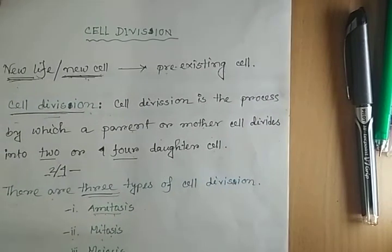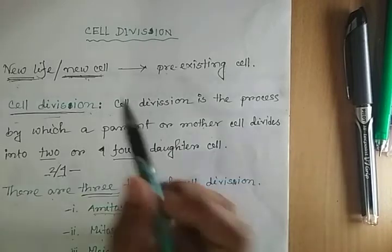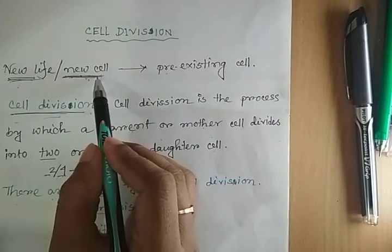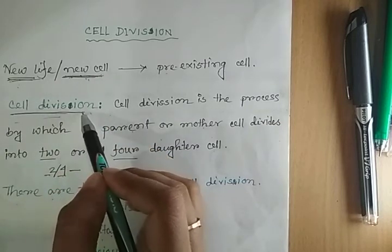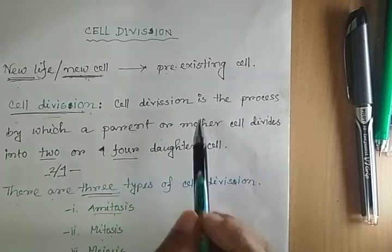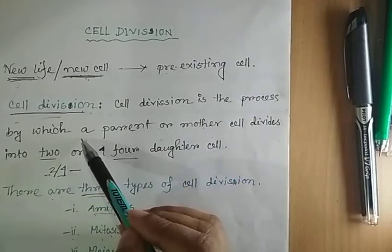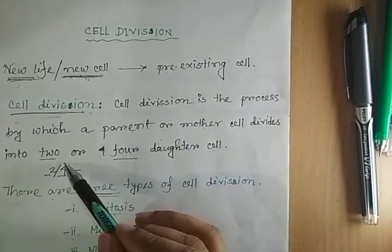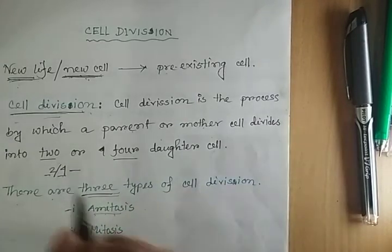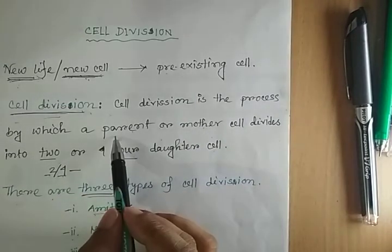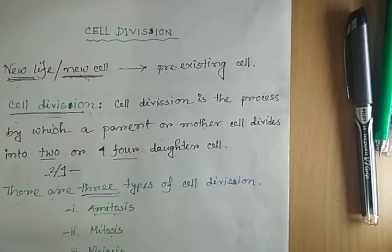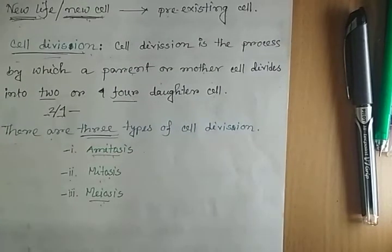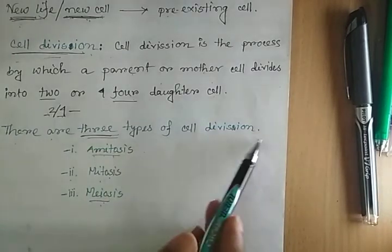Now a question: what is the process of getting new life or a new cell? The answer is cell division. Cell division is the process by which a parent or mother cell divides into two or four daughter cells. That means a single mother cell or single parent cell gives two or four daughter cells.